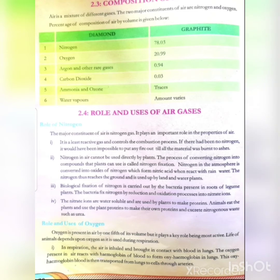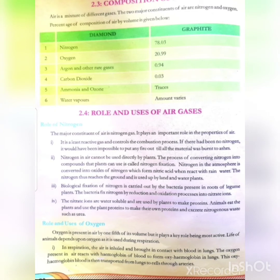Now the role and uses of oxygen. Oxygen is present in air at one-fifth of its volume, but it plays a key role being the most active gas. Life of animals depends upon oxygen as it is used in respiration. If there is no oxygen, there is no life. Oxygen plays a vital role in supporting life, as plants, animals, and microorganisms all use oxygen for the process of respiration.